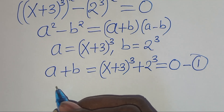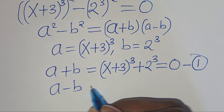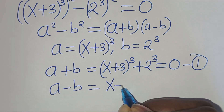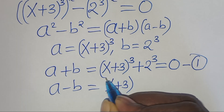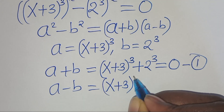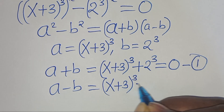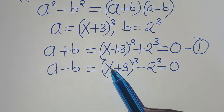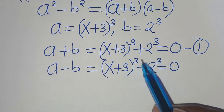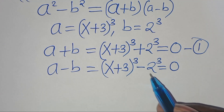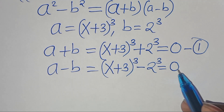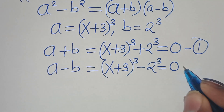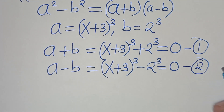We have that a minus b is equal to x plus 3 raised to the power of 3, minus 2 to the power of 3, equal to 0. Let's call this equation 2.